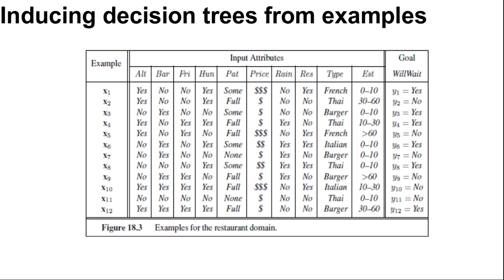There is no way to efficiently search through the 2 to the power n trees. With some simple heuristics, we can find a good approximate solution: a small consistent tree. The decision tree algorithm adopts a greedy divide and conquer strategy and always tests the most important attributes first.